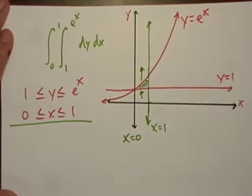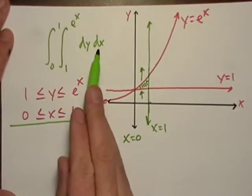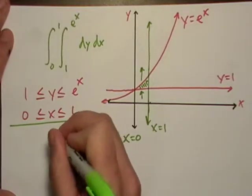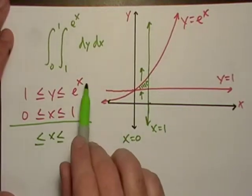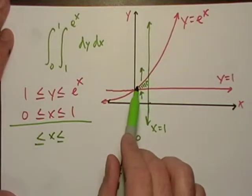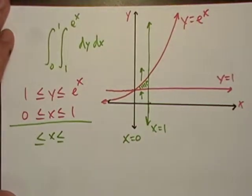Okay, so that's how we got our original one. So now let's flip these. We're going to go with respect to x first, so I'm just going to write x. And we're going to figure out, along the x axis, where does this thing begin to exist? Well, it begins to exist at y equals e to the x.